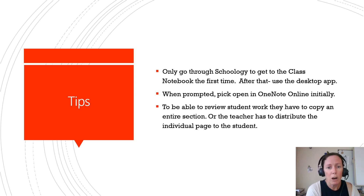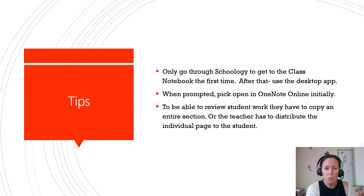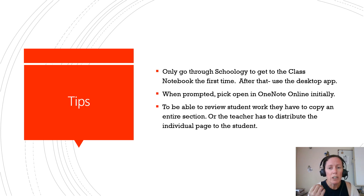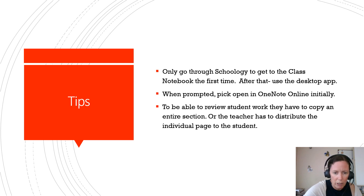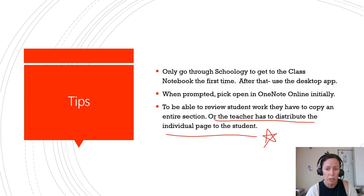Here are a few tips. Only go through Schoology to get to the Class Notebook the first time — after that, use the desktop app. The desktop app has a lot more functionality than the web version, so make sure you watch the video about pinning the app so you can get to it quickly. When prompted, pick 'Open in OneNote Online' initially — you open it online just the first time, then switch to the app. Take some time this week to go through both the online version and the app version to see the differences. Finally, to review student work, they have to copy an entire section, or the teacher has to distribute the individual page to the student. I want to underline this: the only reason I can see what you are working on in the Meet the Class page is because I distributed it to the individual students.